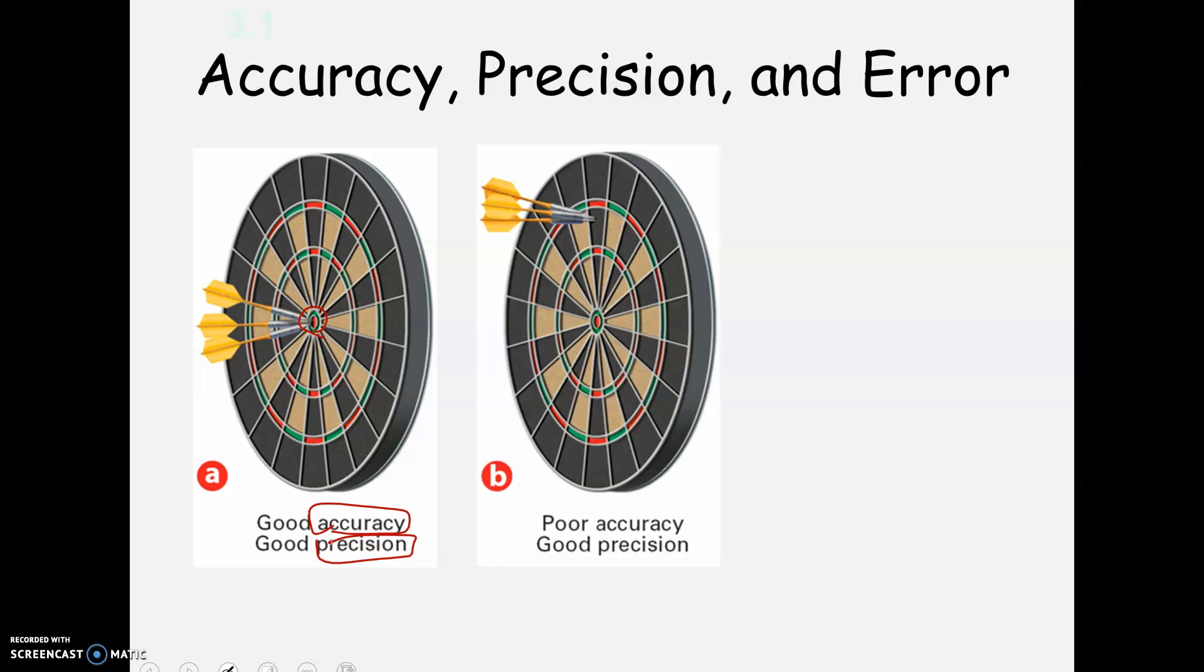Now this one shows us poor accuracy. Assuming we were aiming for the bullseye, we missed. But we do have good precision. Every time we throw, we are hitting in the same basic location.